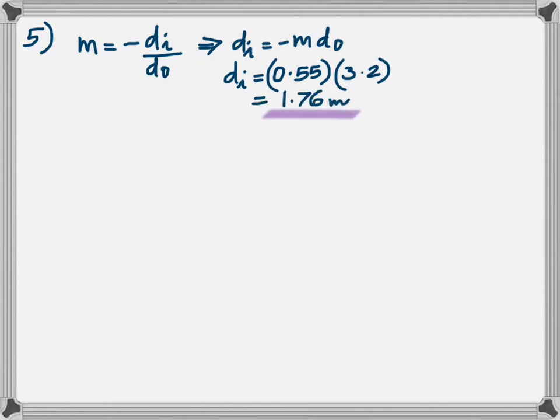Once you get dI, and you already know dO, just use it in the equation and find the focal length. The focal length is negative, it's a convex mirror.